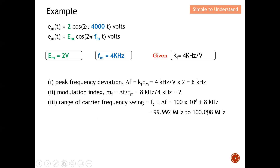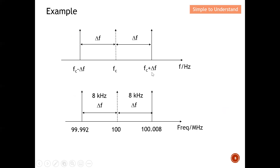From this result we can draw the diagram: the carrier frequency is 100 MHz, and it swings from 99.992 MHz to 100.008 MHz, with a peak frequency deviation of 8 kHz. That completes this example. Thank you so much — with this I'd like to end the discussion. Please help to like and subscribe. Thank you.